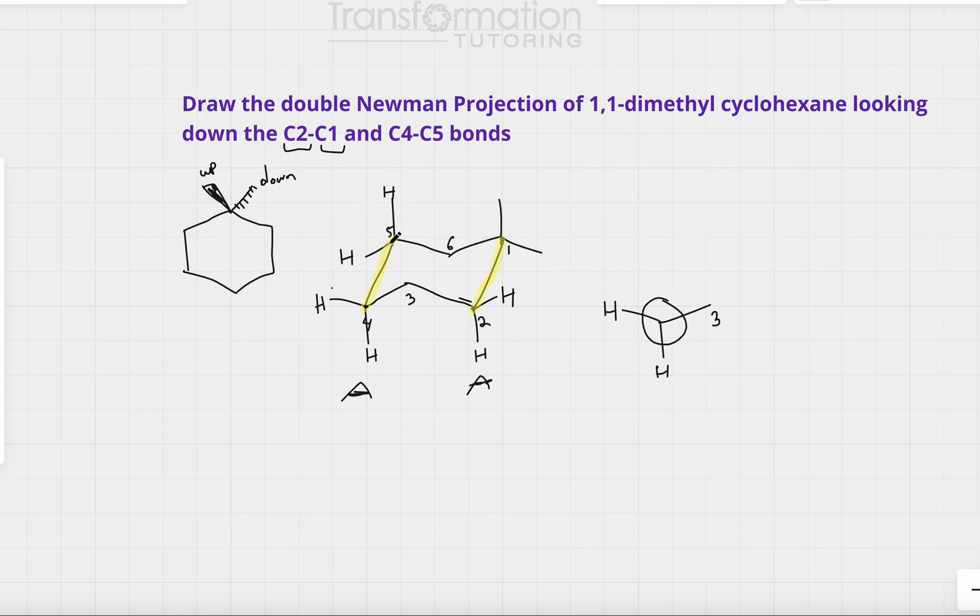But what is my carbon 5 attached to? Carbon 5 is attached to hydrogen on top and it's attached to hydrogen going down this way. Next, let's go ahead. So this is carbon 4 to carbon 5 bond. Let's go ahead and look at carbon 2 to carbon 1 bond and do the same thing.